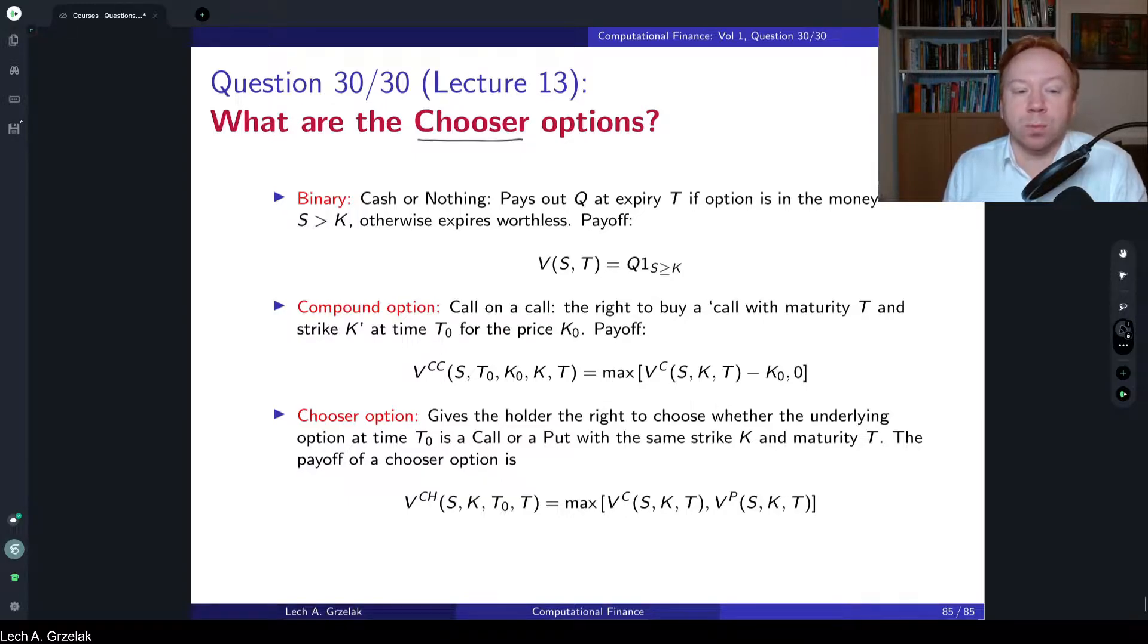The first one is the binary option, or binary payoff, which is often called cash or nothing. There are different variants of binary type payoffs. Whenever you have indicator functions, so an indicator in this case where stock S is bigger than strike K at maturity, then we always talk about binary features of a payoff. In this case, we have Q which is a constant, and then we have an indicator, so it only pays out amount Q if at the expiry date stock would be larger than K.